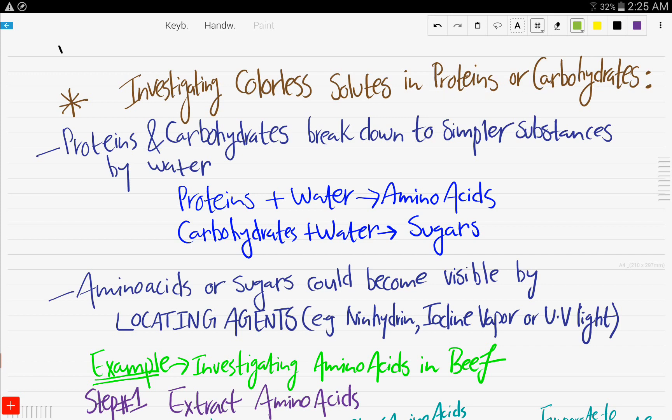And these are present in proteins and carbohydrates. First, before we get into that, you have to know that proteins and carbohydrates break down into simpler substances by water. That is, proteins plus water give you amino acids and carbohydrates plus water give you sugars.